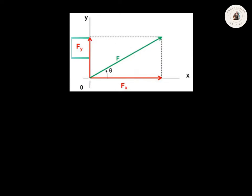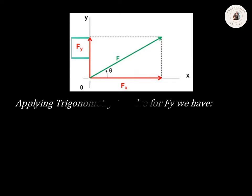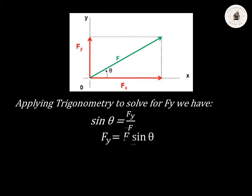Next is to solve for Fy. To solve for Fy, we're going to apply trigonometry. So if we apply trigonometry, we have sine theta equals Fy over F. Cross-multiplying so that we can have an equation for Fy, we have Fy equals F multiplied by sine theta.